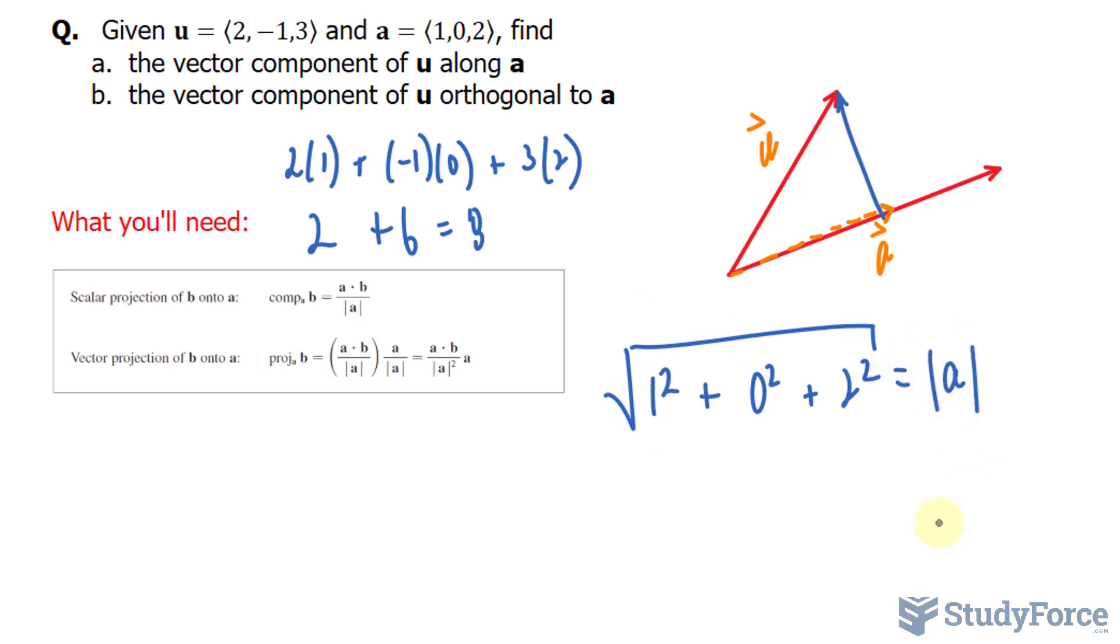And that's denoted by these two absolute signs. 1 plus 4, that equals 5. So we have the square root of 5 as the magnitude.